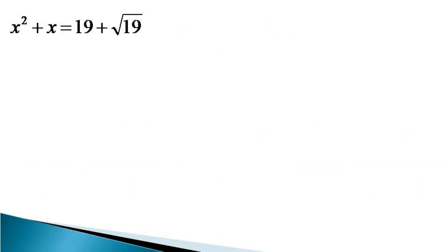The equation is given as x square plus x is equal to 19 plus root 19 and one obvious root comes as x is equal to root 19. So let us see how we find the other root using the method of factorization.